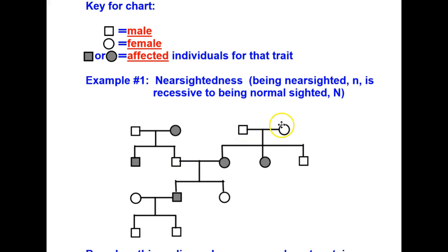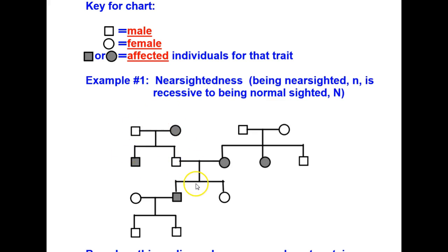Over here we have a male and a female that mated and produced two girls and one boy. The two girls were each nearsighted. A girl from this family mated with the boy from the other family and they produced two offspring — one was a boy, one was a girl, and the boy was nearsighted. This boy mated with another female and both their offspring were boys that were not nearsighted.